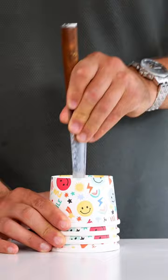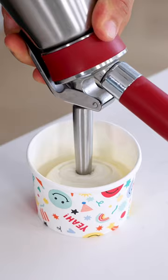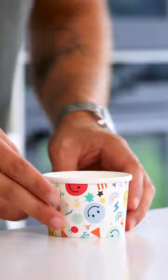Charge the siphon with two charges and shake it well after each charge. Then take four paper cups and make thin cuts at the bottom. Fill the cups halfway and bake them in a microwave at 700 watts for 45 seconds.